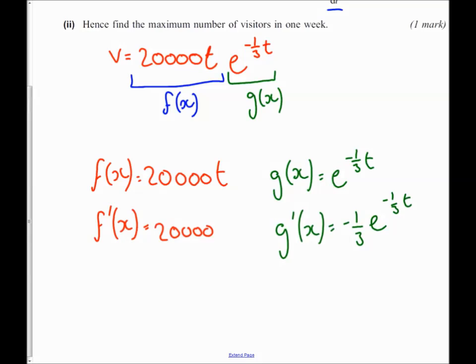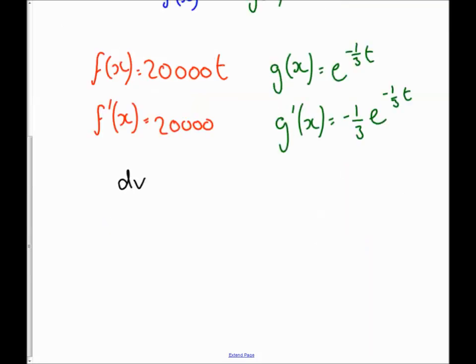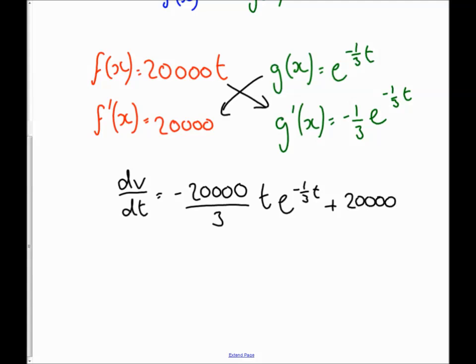So finally to get my dv by dt, I multiply my diagonals. So that's going to give me minus 20,000 over 3t e to the minus a third t plus, when I multiply my diagonals this way, I just get 20,000 e to the minus a third t.